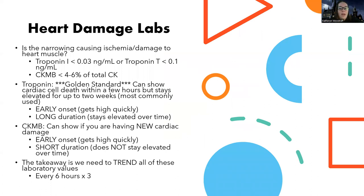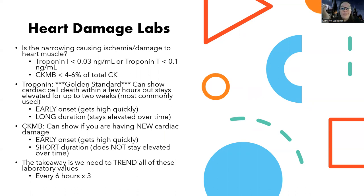Now let's talk about heart damage labs. We can't check a peripheral neurovascular assessment on the heart, but we can see if there's damage happening to the heart. If I get such bad flow to my heart that there is actual cell death, I'm really starting to have an issue. There's a troponin I and a troponin T. If we give you a troponin on the test, it's either going to be elevated or it's not - don't get hung up on whether it's an I or T.